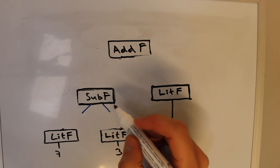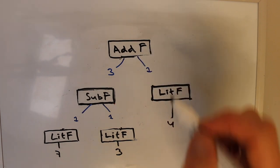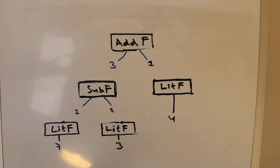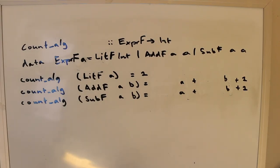Looking at this graphically, it's no longer a nice recursive tree because we've removed the recursion. At each place that previously contained a recursive field there are now just answers. That's the count algebra. We can do the same thing for eval. We've thrown out the recursion and assumed the problem of reintroducing it would solve itself — but of course problems don't solve themselves, so that's what we're going to do next.